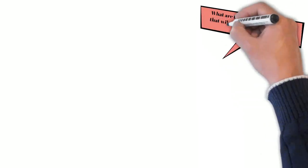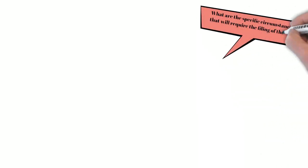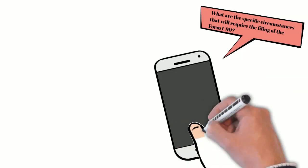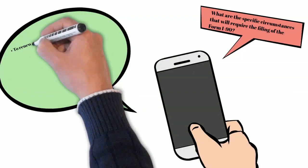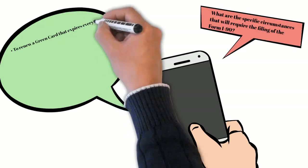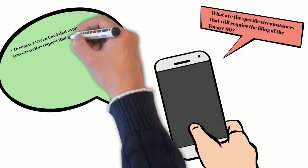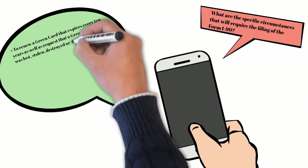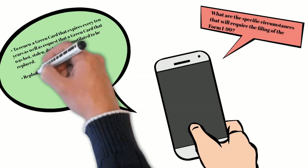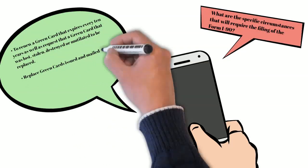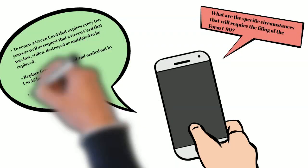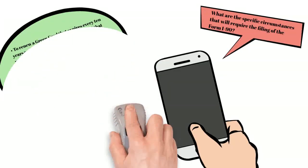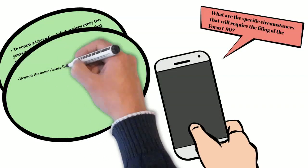What are the specific circumstances that will require filing of Form I-90? To renew a green card that expires every 10 years, and to request a replacement if your green card was lost, stolen, destroyed, or mutilated. To replace green cards issued and mailed out by USCIS but never received. To request correction of incorrect data and information. To request a name change for a green card holder that had their name legally changed.